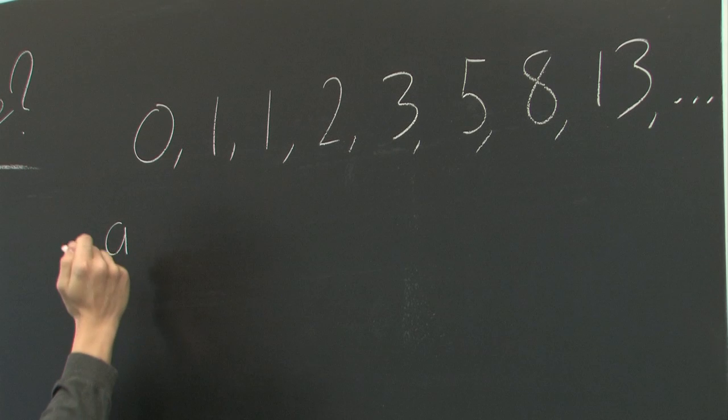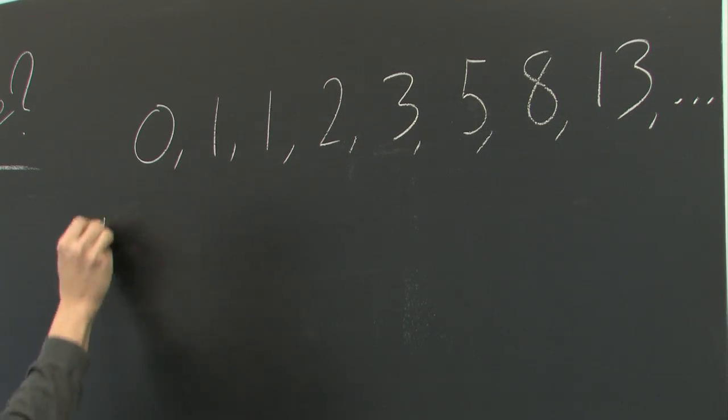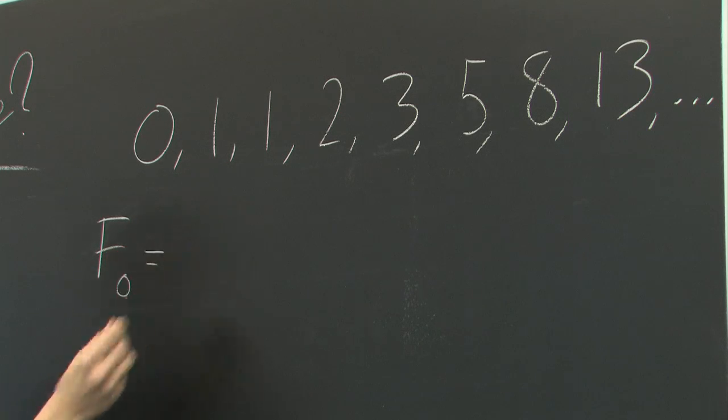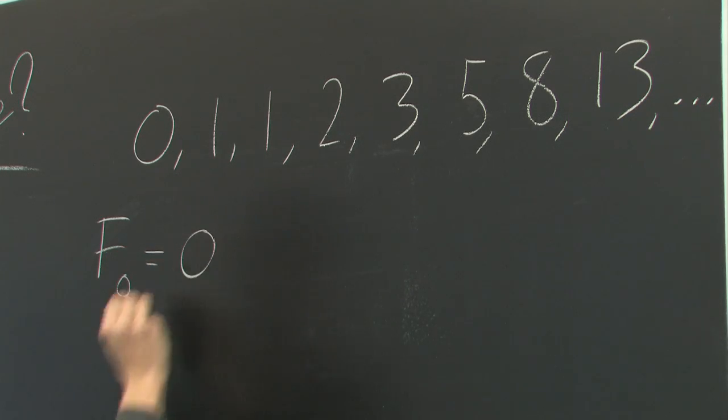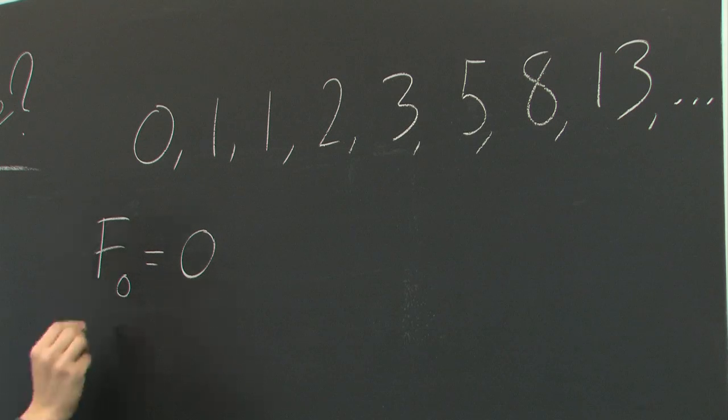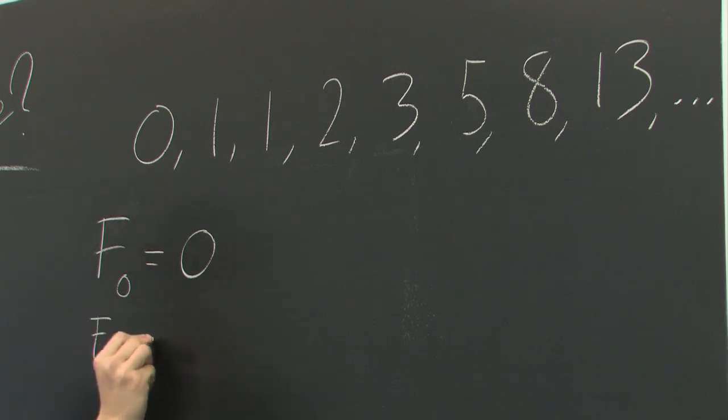So the way that we usually do that, we'll give some initial conditions. Say that F0, or the zeroth term in our sequence, is given by 0. F1 is given by 1.